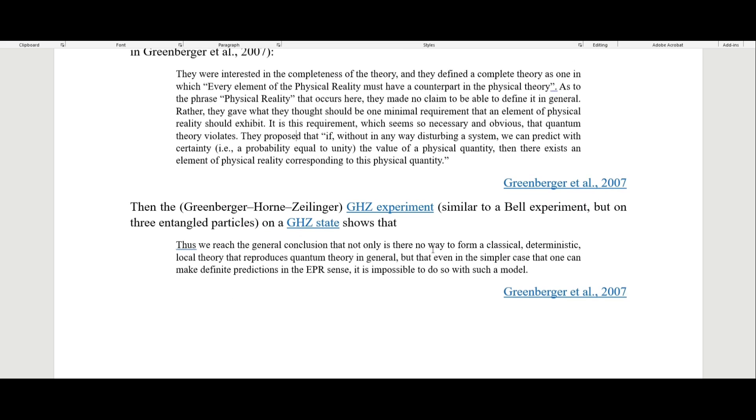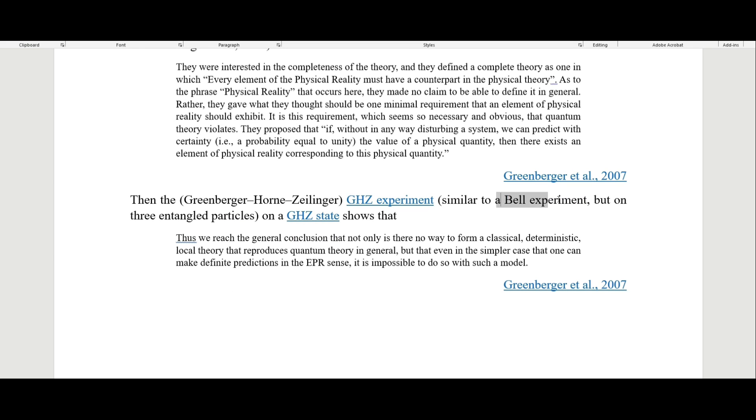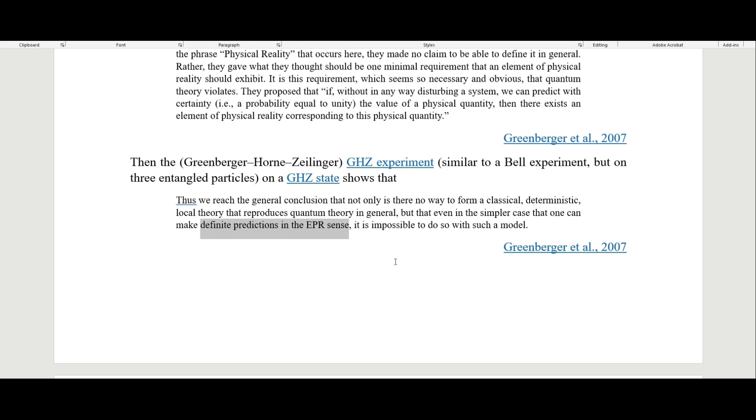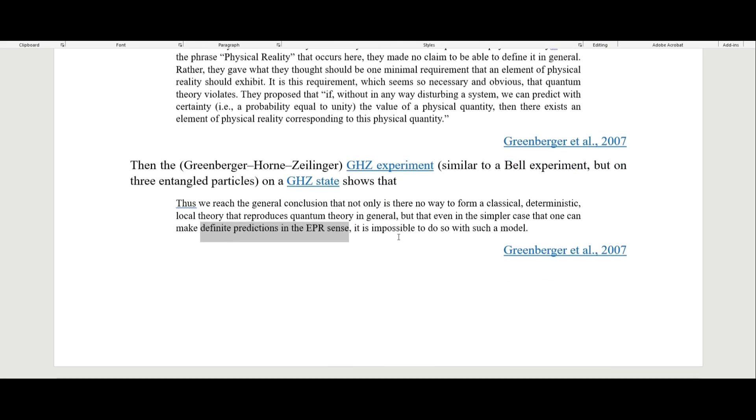Then the GHZ experiment, which is similar to a Bell experiment but on three entangled particles, shows that. From the Greenberger et al. 2007 paper: thus we reach the general conclusion that not only is there no way to form a classical deterministic local theory that reproduces quantum theory in general, but that even in the simpler case where one can make definite predictions in the EPR sense, it is impossible to do so with such a model.